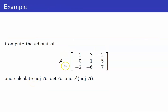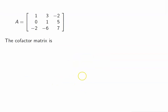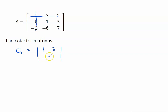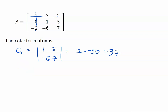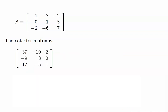Suppose we want to find the adjoint of A, its determinant, and the product A times adjoint of A. Let us first compute the cofactor matrix. First, let us compute C_1-1. C_1-1 is positive 1 times the determinant of the 2×2 submatrix with entries 1, 5, negative 6, 7. So we get 7 minus negative 30, that is 37. I leave it up to you to compute all the cofactors, and upon doing that, you will get the cofactor matrix.